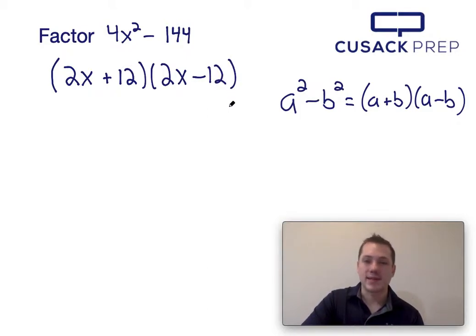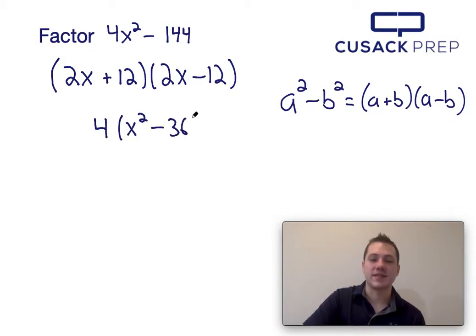Now you might notice that this can actually be factored in a slightly better way, and that way is we start by factoring out the greatest common factor from 4x squared minus 144. Both 4x squared and 144 are divisible by 4, so I can take a 4 out and turn this into 4 times x squared minus 36.